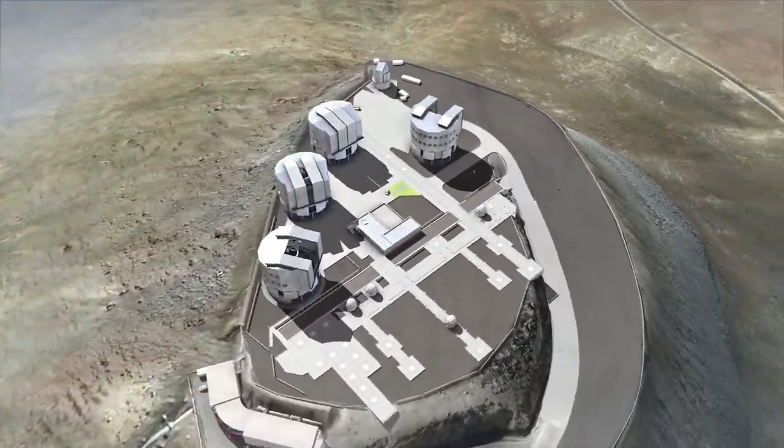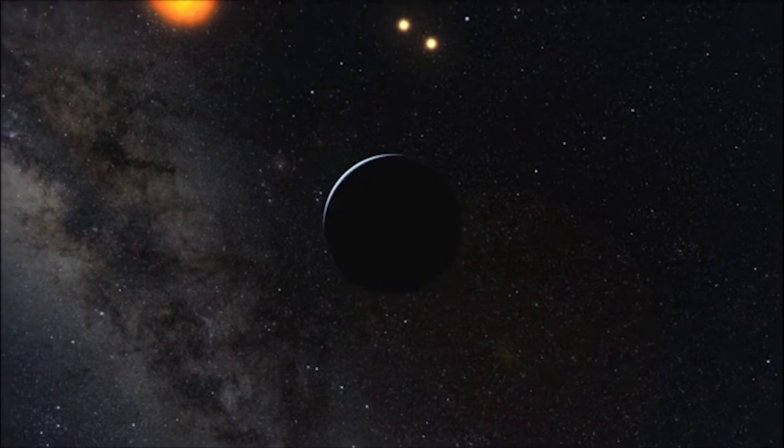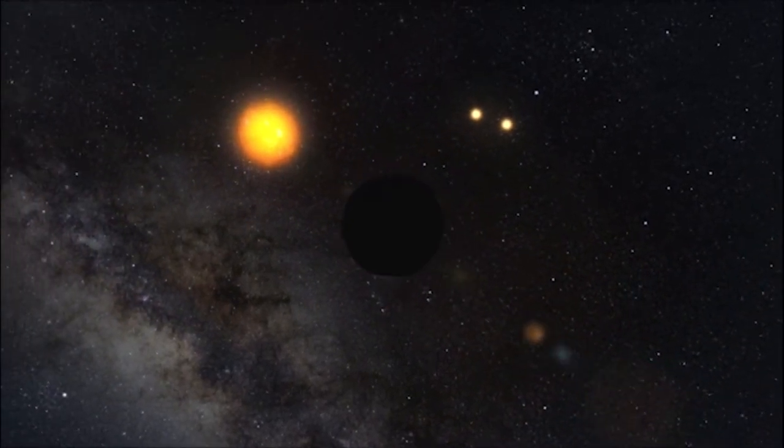With next-generation telescopes, we're going to actually be able to look at Earth-sized planets around Sun-like stars, so we'll be able to get actual pictures and images of these systems.